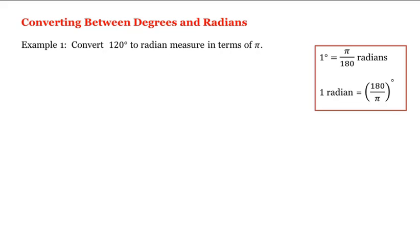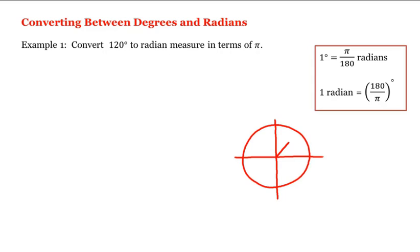Let's think of a unit circle — that is, a circle with radius one. Remember that the radian measure of an angle is the length of the corresponding arc. So what would the radian measure be of one full rotation? That would be the length all the way around the unit circle, which is the circumference — two pi times the radius, which is one.